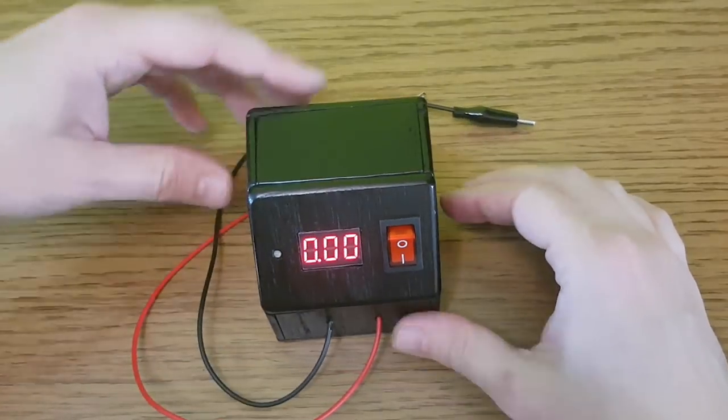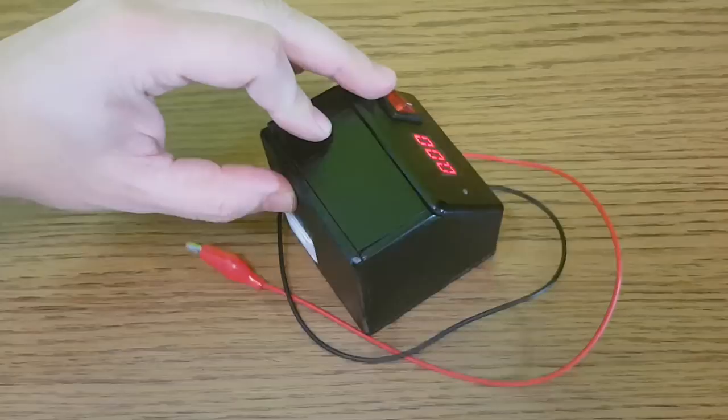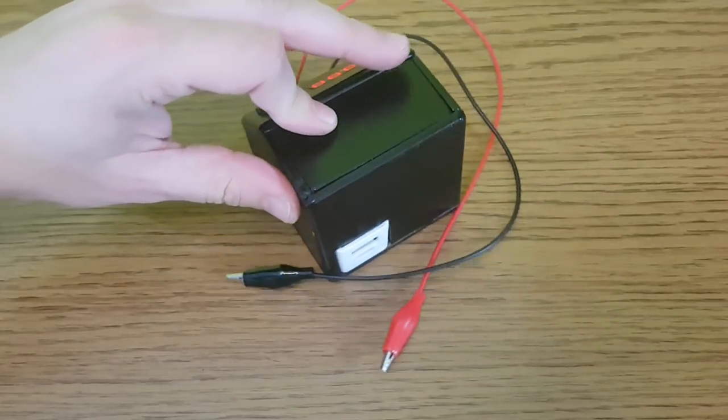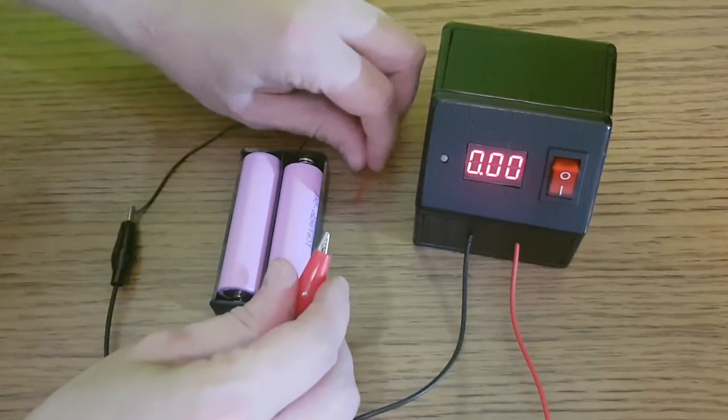And now behold the finished product. I'm quite pleased with its looks. The black paint gives it a vintage appearance. You can use it to measure direct current voltages of maximum 30 volts.